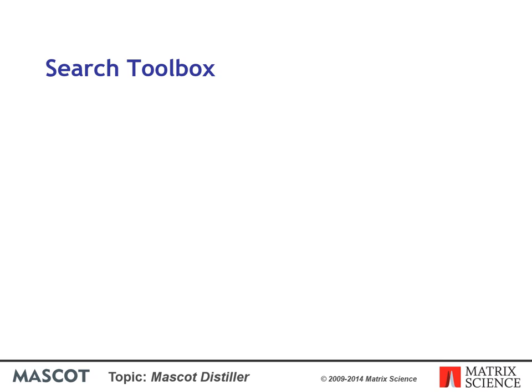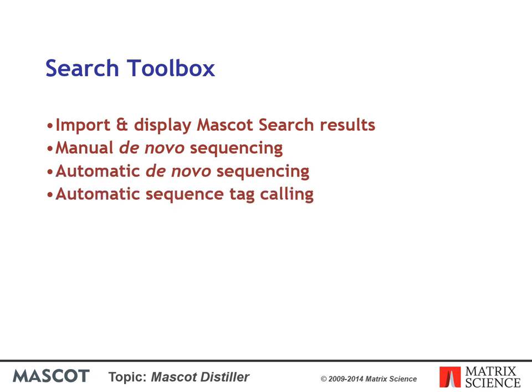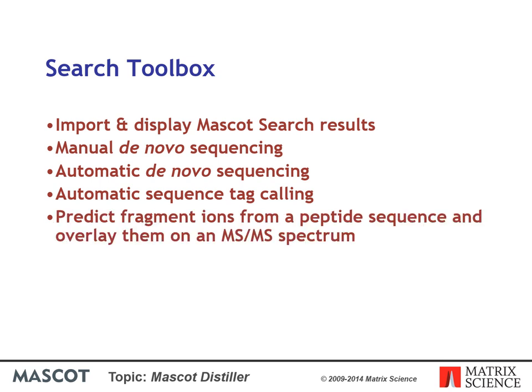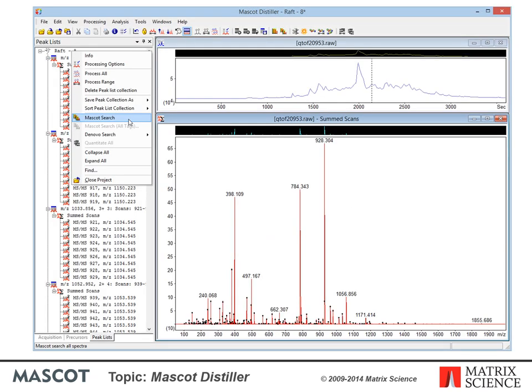The search toolbox is a collection of tools for protein identification and characterization. It allows you to import and display Mascot search results, provides manual and automatic de novo sequencing, automatic sequence tag calling, and lets you predict fragment ions from a peptide sequence and overlay them on an MSMS spectrum. Similarly, you can predict mass values from a protein digest and overlay them on a spectrum.